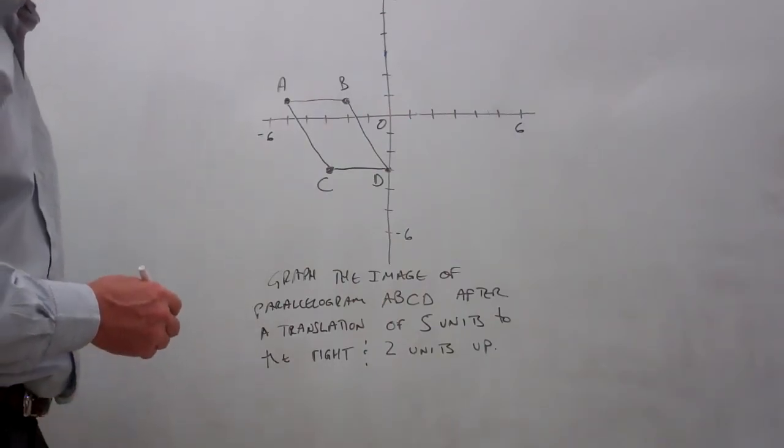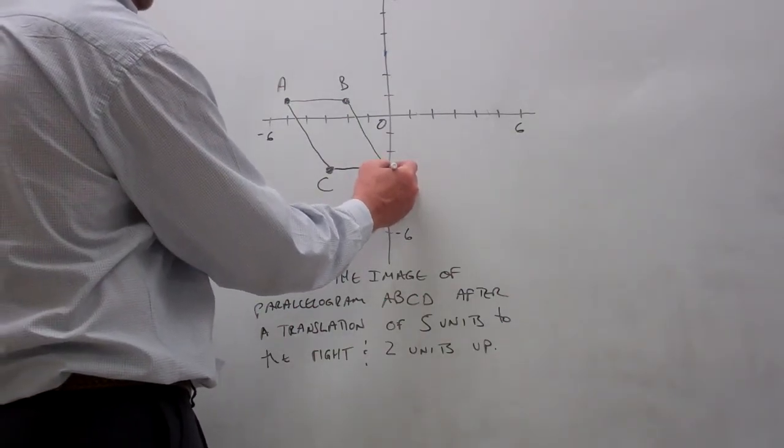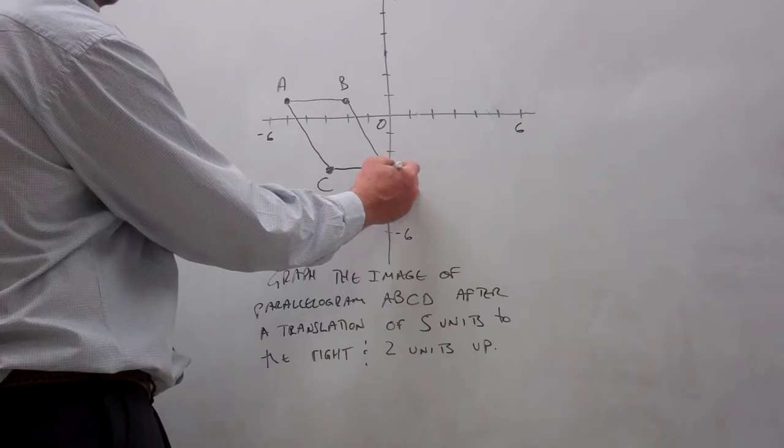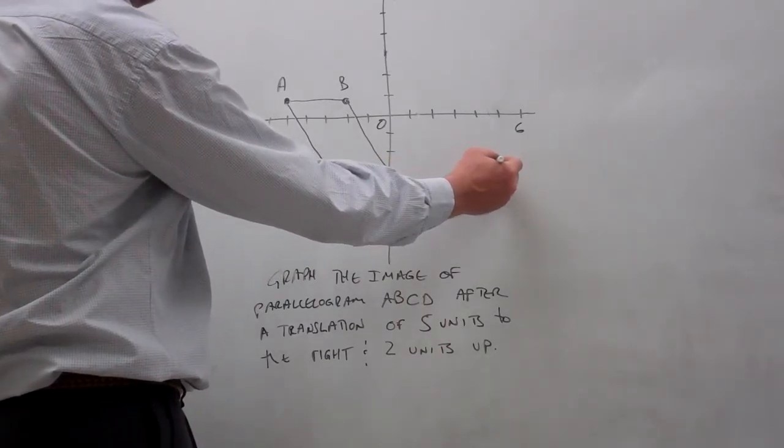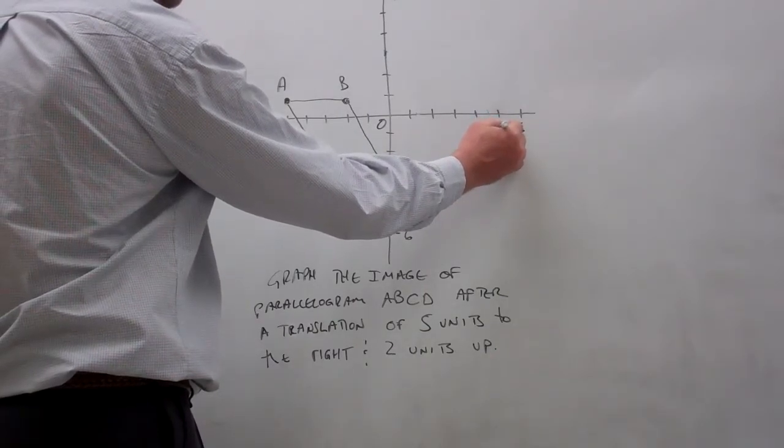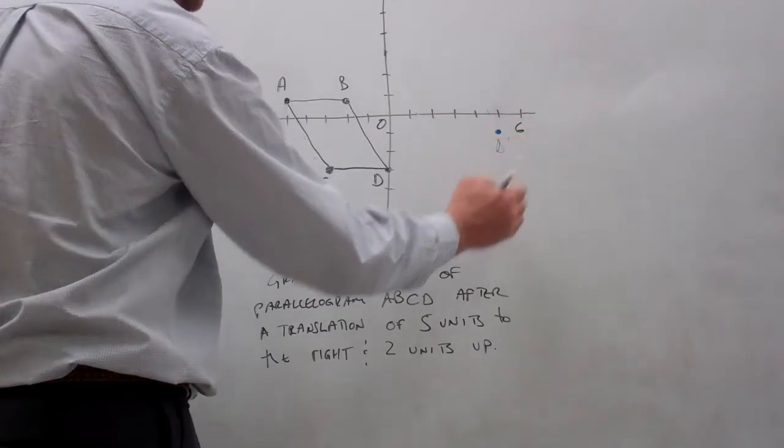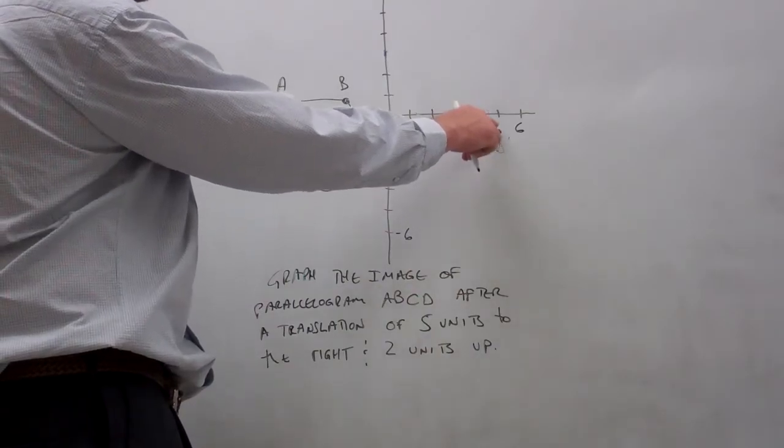and move it five units to the right and two units up. So if we start with point D, the coordinates are 0, negative 3. Moving it five units to the right, the x value becomes 5, and moving it two units up, the y value becomes negative 1. We'll call that point D prime.